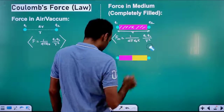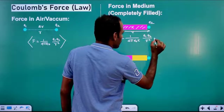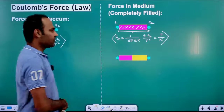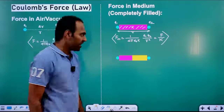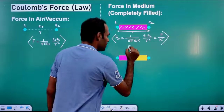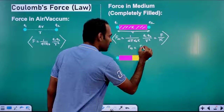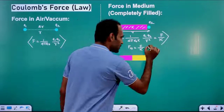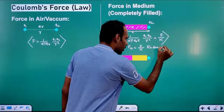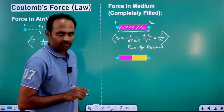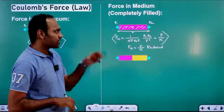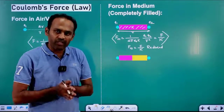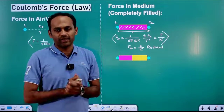We can rewrite this formula as F divided by K. Because 1 over 4π ε₀ times Q1 Q2 over R square is the force in air F. So the force in medium equals force in air divided by K. The force has been reduced K times. Whenever you substitute a dielectric medium completely between the charges, the force gets reduced by K times.